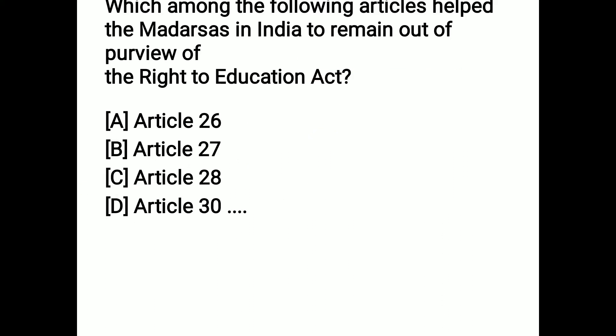The next question: which among the following articles helped Madrasas in India to remain outside the purview of the Right to Education Act? Options are Article 26, 27, 28, or 30. Article 30 protects Madrasas in India and gives them the right related to cultural and educational matters. Option D is the correct answer.